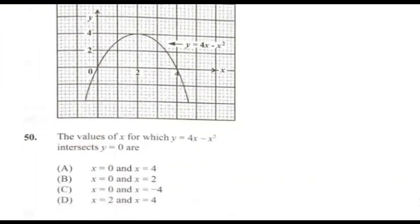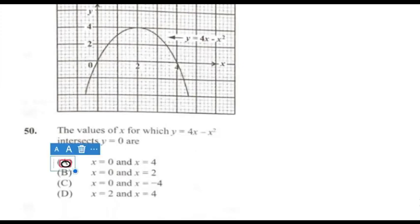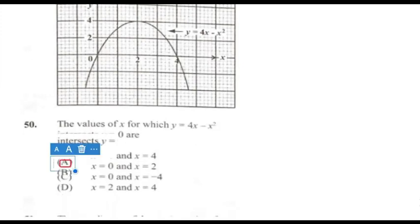Question 50 to 51 refers to the following graph. The values of x for which y = 4x − x² intersects y = 0 are x = 0 and x = 4. Looking at where y equals 0, the points on the x-axis are 0 and 4. Answer for 50 is A.